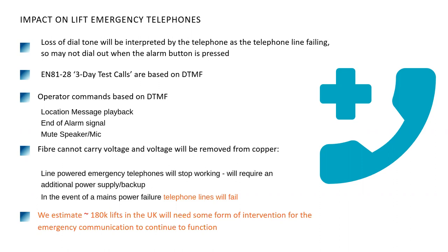Fiber cannot carry the line voltage that copper had, and line voltage will be removed from existing copper. A line-powered emergency telephone — one which draws its voltage from the line — will stop working, requiring an additional power supply and battery backup. Crucially, in the event of a mains power failure, telephone lines will now fail. Our estimate, working with the Lift and Escalator Industry Association in the UK, is that around 180,000 lifts out of the roughly 300,000 installed in the UK will require some form of intervention.